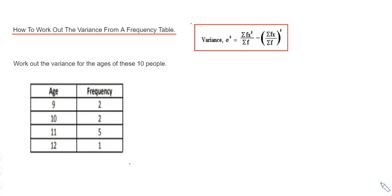To do this, I'm going to use the formula shown in the red box: sigma fx squared divided by sigma f, minus in a bracket sigma fx divided by sigma f, close your bracket and square it.